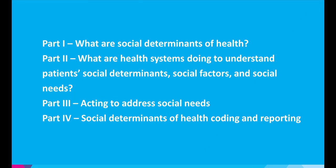The information is broken into four parts. Part one: what are social determinants of health? Part two: what are health systems doing to understand patients' social determinants, social factors, and social needs? Part three: acting to address social needs. And part four: social determinants of health coding and reporting.